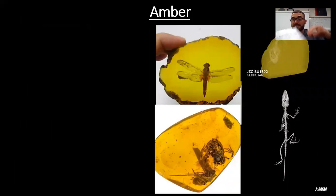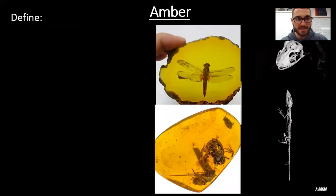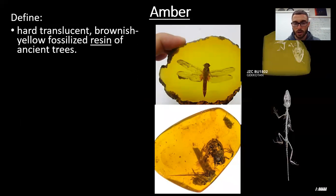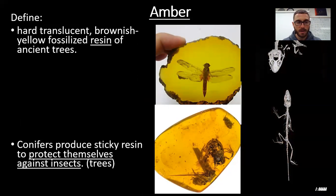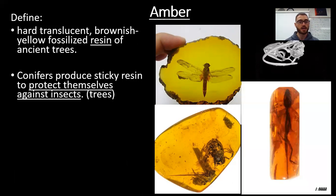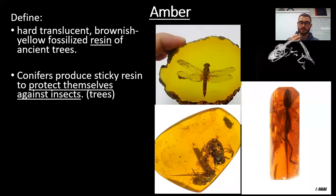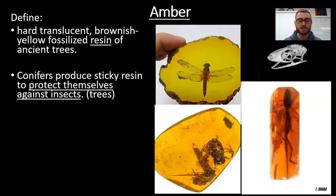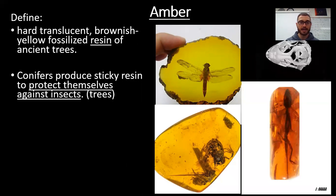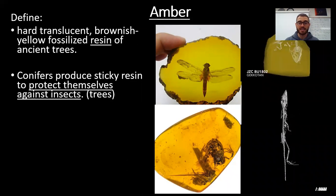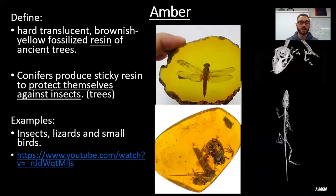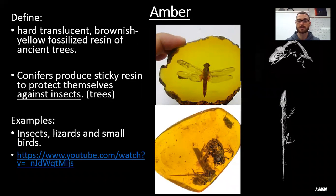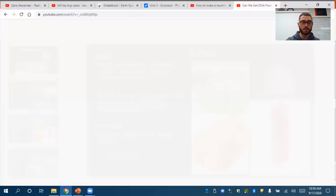Our second category on page 11 is amber. We already know this is hardened tree sap — hard, translucent, brownish-yellow fossilized resin of ancient trees. Resin is just a technical term for tree sap. Conifers, those pine trees like Christmas trees, produce sticky resin that makes amber. Trees use resin to protect themselves from insects like termites and ants that can be harmful to the tree's health. Fossils found in amber include insects, lizards, and small birds.